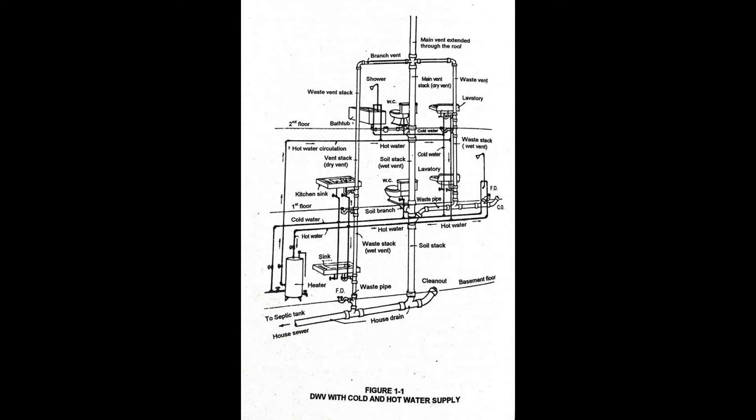Effective opening is the minimum cross-sectional area at the point of water supply discharge, measured or expressed in terms of diameter of a circle. If the opening is not a circle, the diameter of a circle that is equivalent to the cross-sectional area. This is applicable to air gap.